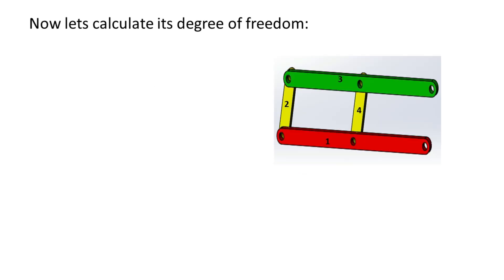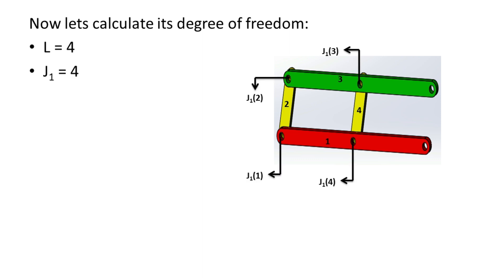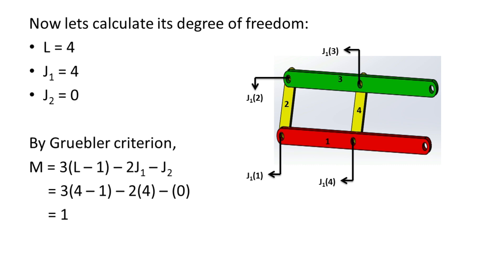Now let's calculate the degree of freedom with the redundant link removed. The effective number of links equals 4, the number of joints with one degree of freedom equals 4, and the number of joints with two degrees of freedom equals 0. By the Gruebler Criterion, the degree of freedom computes to 1, which is in agreement with the actual degree of freedom for this mechanism.